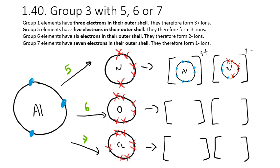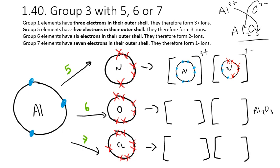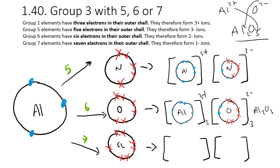Aluminium with oxygen forms Al2O3. We can test this using the crossing over method: Al3+, O2-, write AlO, take the numbers to either side — 3 goes here, 2 goes here — giving Al2O3. The aluminium is the same: 8 electrons in the outer shell, 3+ ion, and there are going to be 2 of them. The oxygen will be a 2- ion with 3 of them, with 6 electrons in its outer shell that it started with and 2 extras.